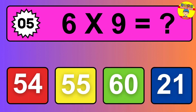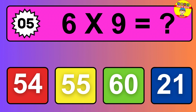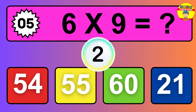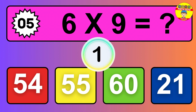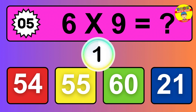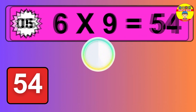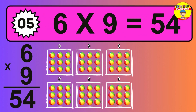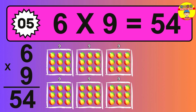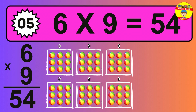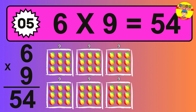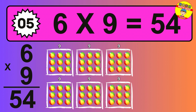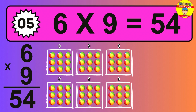Question five. Six times nine equals what? So the answer is six times nine is 54. To calculate, we have six groups with nine balls each one. So how many balls do we have? 54 balls.